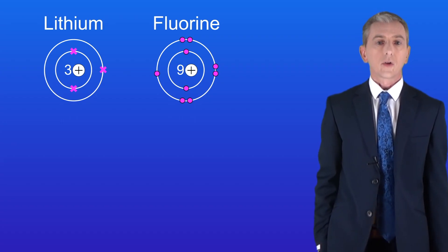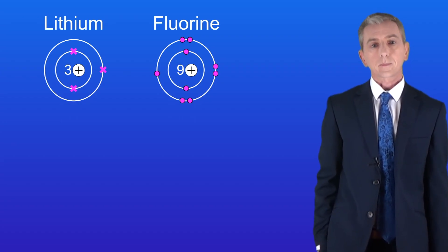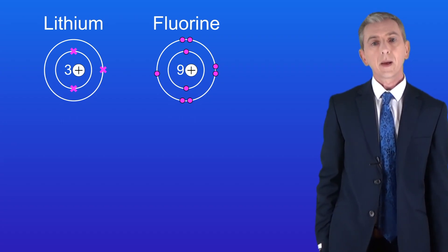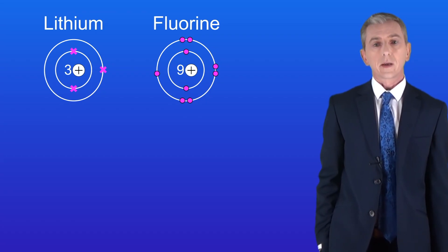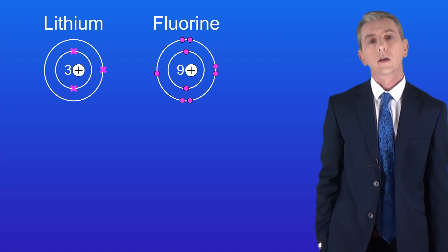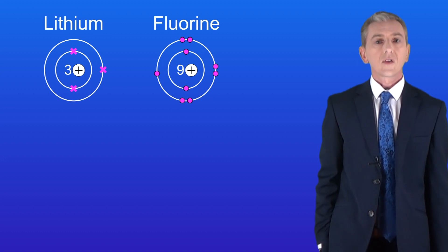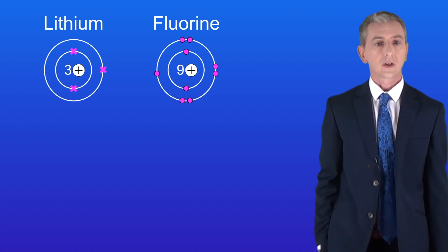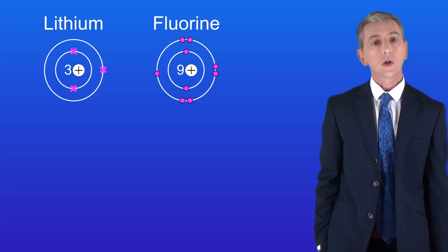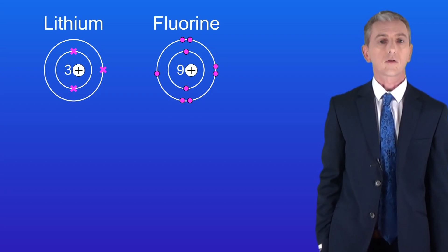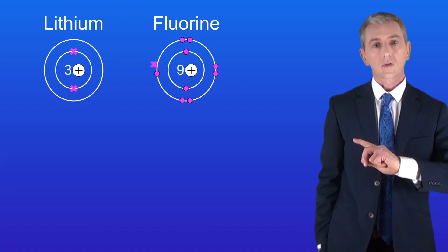That's called a dot and cross diagram. Remember all of the electrons are the same, whether they're shown by dots or by crosses. We can see that neither lithium nor fluorine has a full outer energy level. When we react lithium with fluorine, the lithium atom loses its outer electron and the fluorine atom gains it, like this.